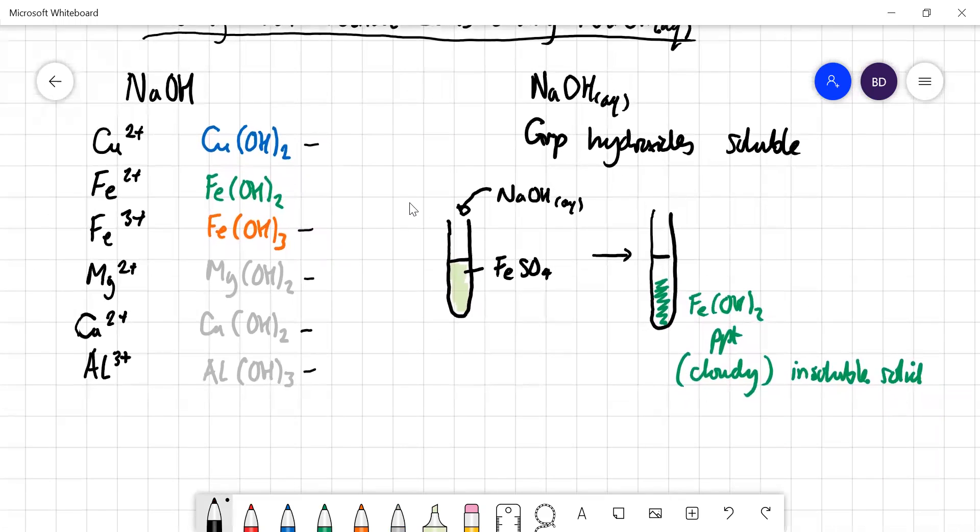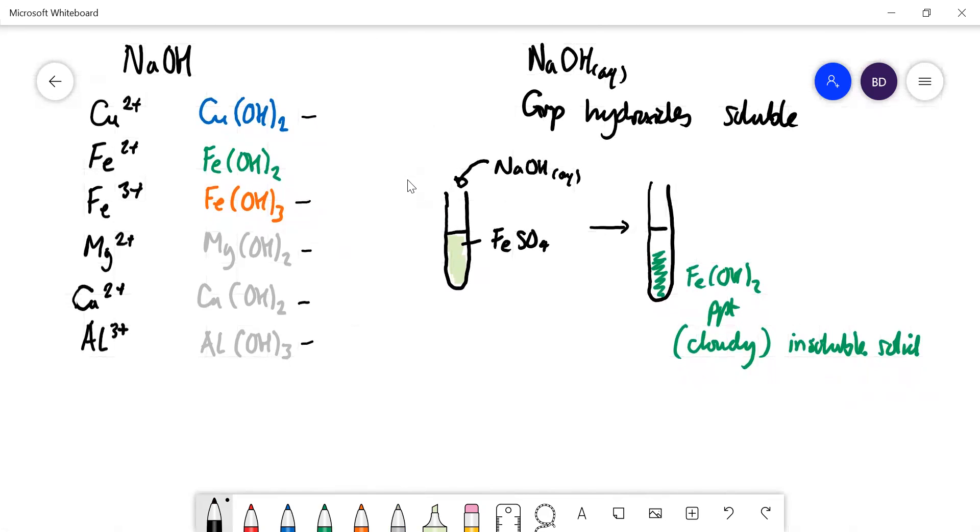Let's write down the equation for the iron 2 reaction. It would be FeSO4 in aqueous solution, and you add sodium hydroxide solution. You're going to get a precipitate of iron 2 hydroxide. The formula of iron 2 hydroxide is Fe(OH)2 because the hydroxide ion has a single charge, OH-, whereas the iron is Fe2+.